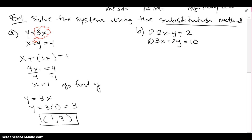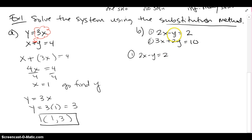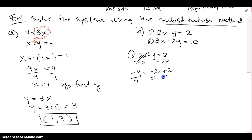Part b is not as easy because I don't have y or x isolated. The x's have coefficients 2 and 3, and the y's have coefficients 2 and negative 1. I would rather work with equation 1 and solve it for y, because y seems to be the loneliest — meaning it has a coefficient of 1 or negative 1. Isolating y and dividing by negative 1 gives us y equals 2x minus 2.